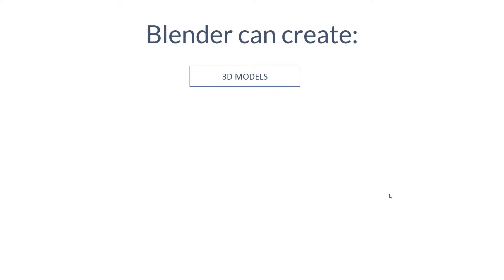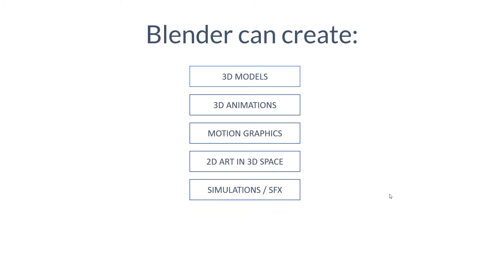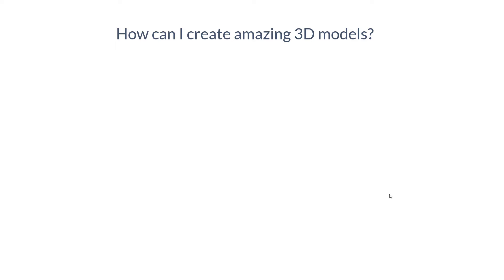When you're starting Blender you might be overwhelmed by the tools available, and your purpose might be different, because Blender can make a lot of things — not only 3D models. It can create animations, feature films, short animated films, motion graphics, 2D art and 2D animations in 3D space, physics simulations, special effects like explosions, and post-production effects like camera tracking, motion tracking, masking, and visual effects. But here we only concentrate on making 3D models.